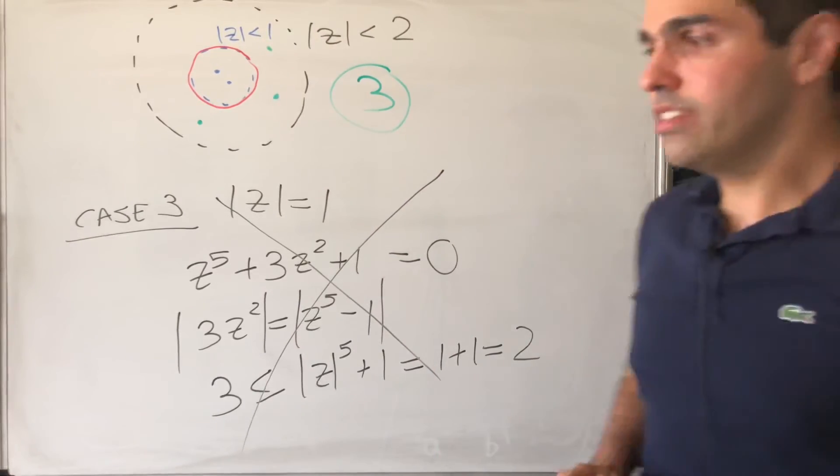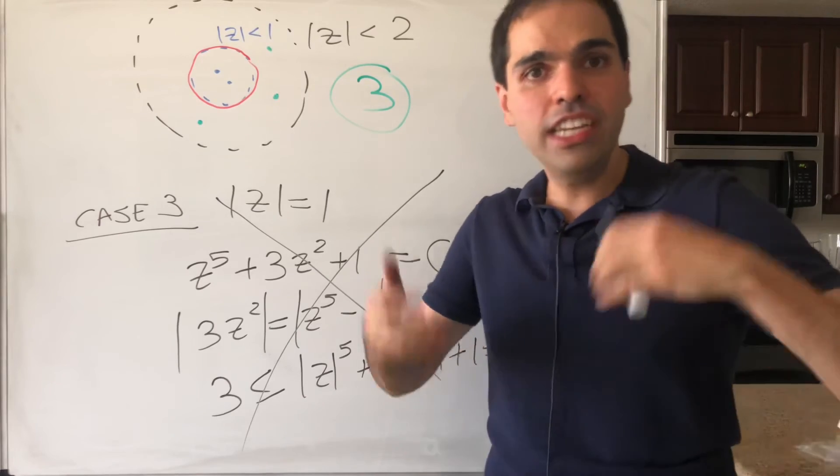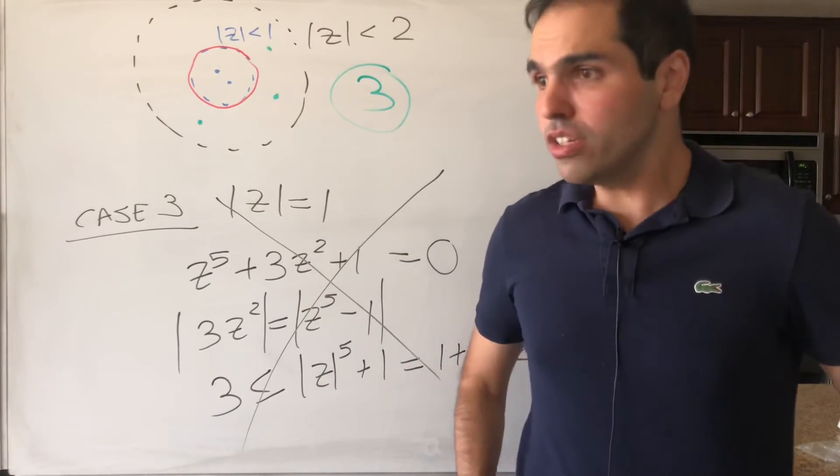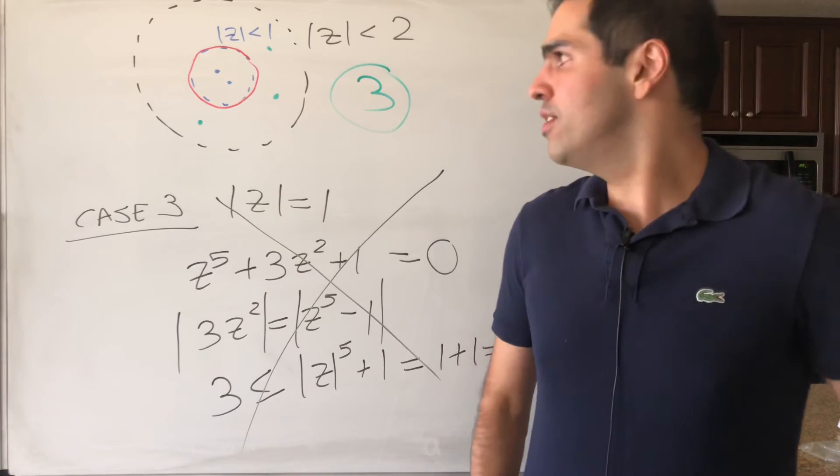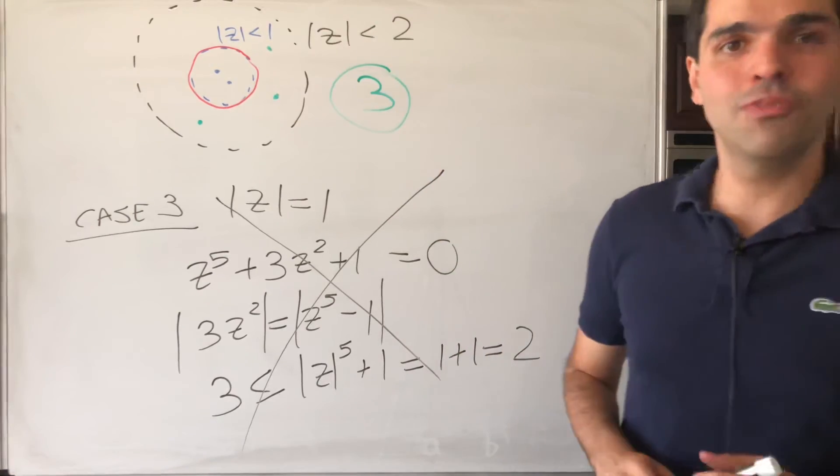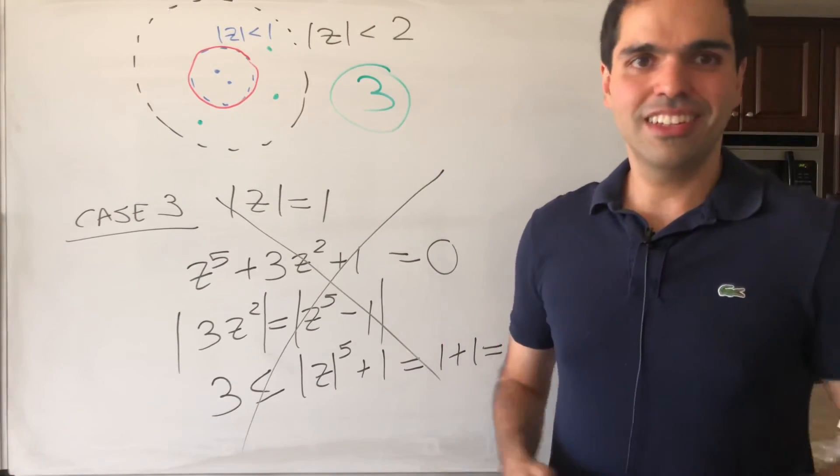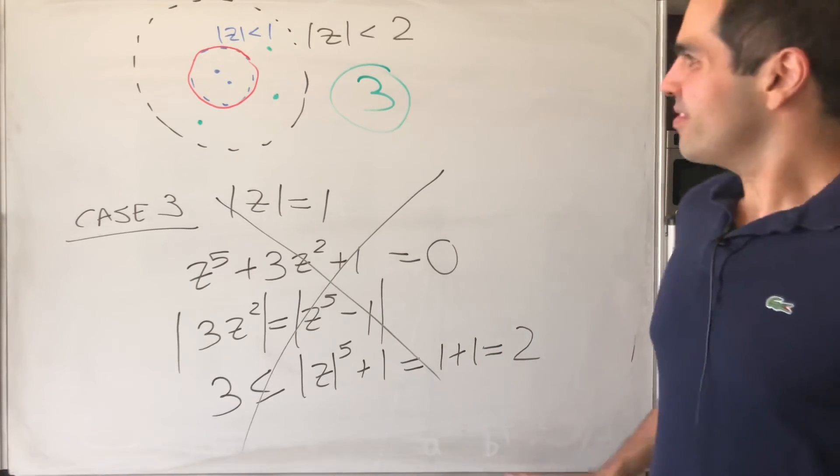And you see, that's what's nice about Rouche's theorem. We never actually found the roots. We just know, again, without doing any problem-solving, that there must be 3 roots here. And that is very, very nice, I think.